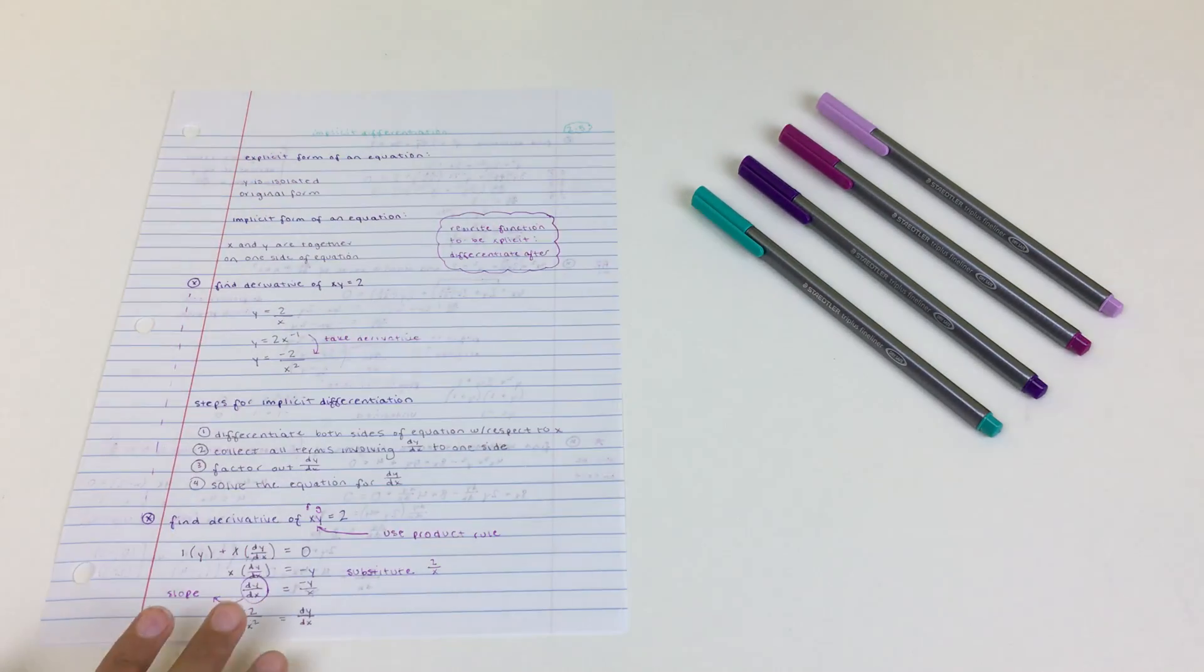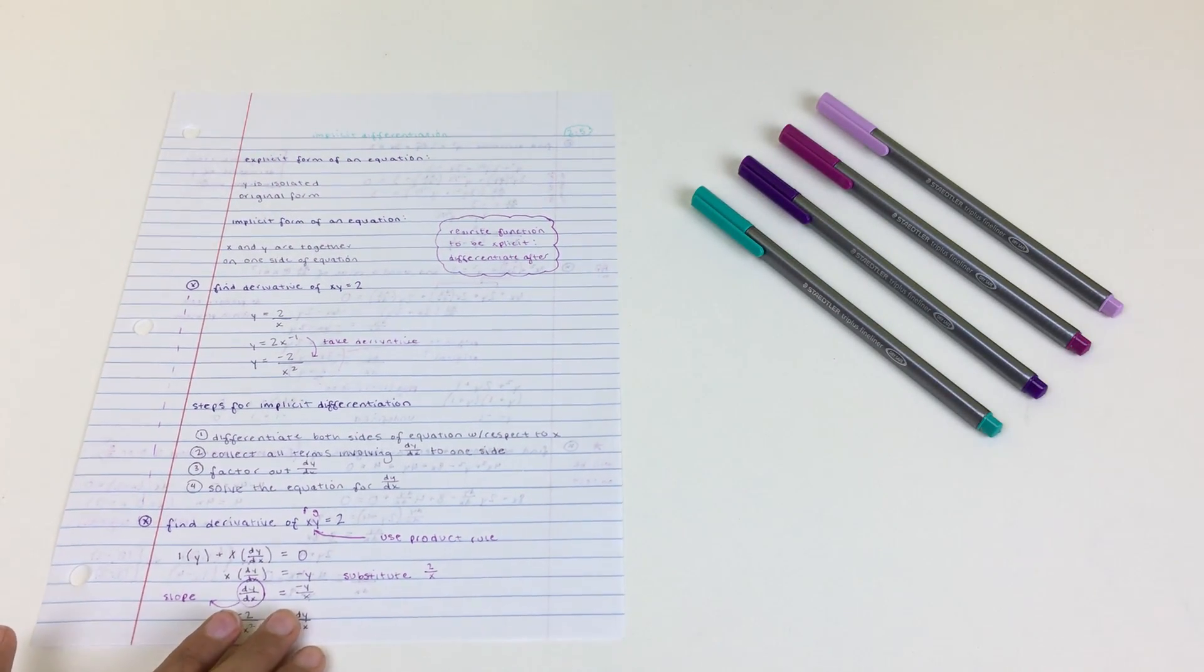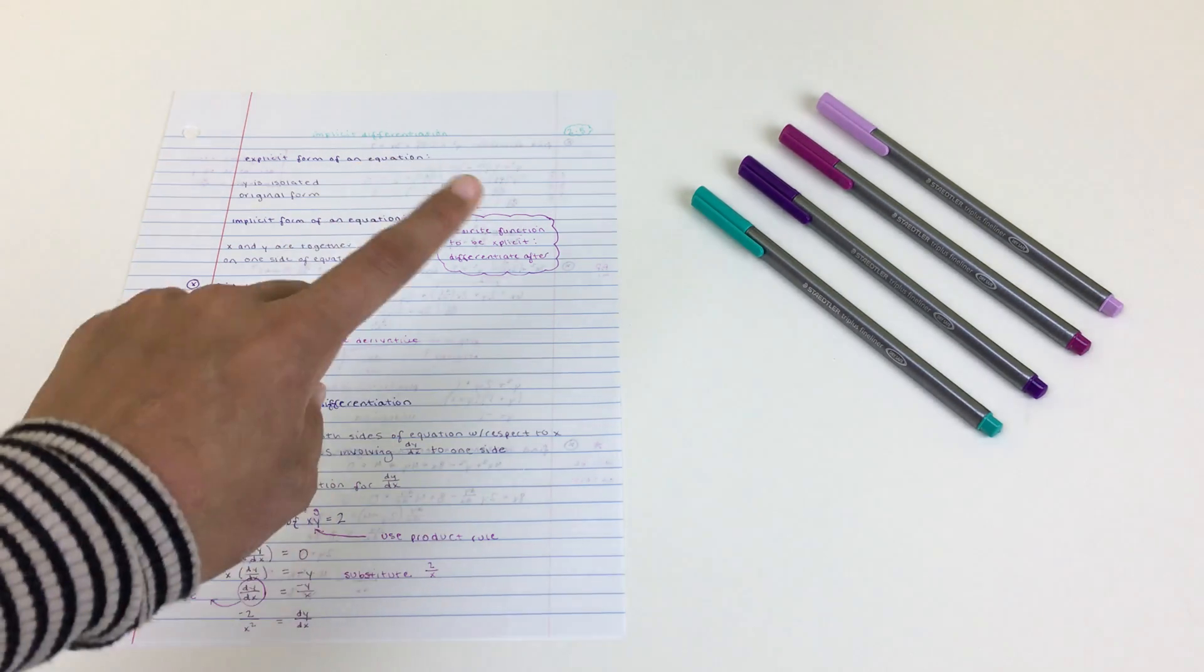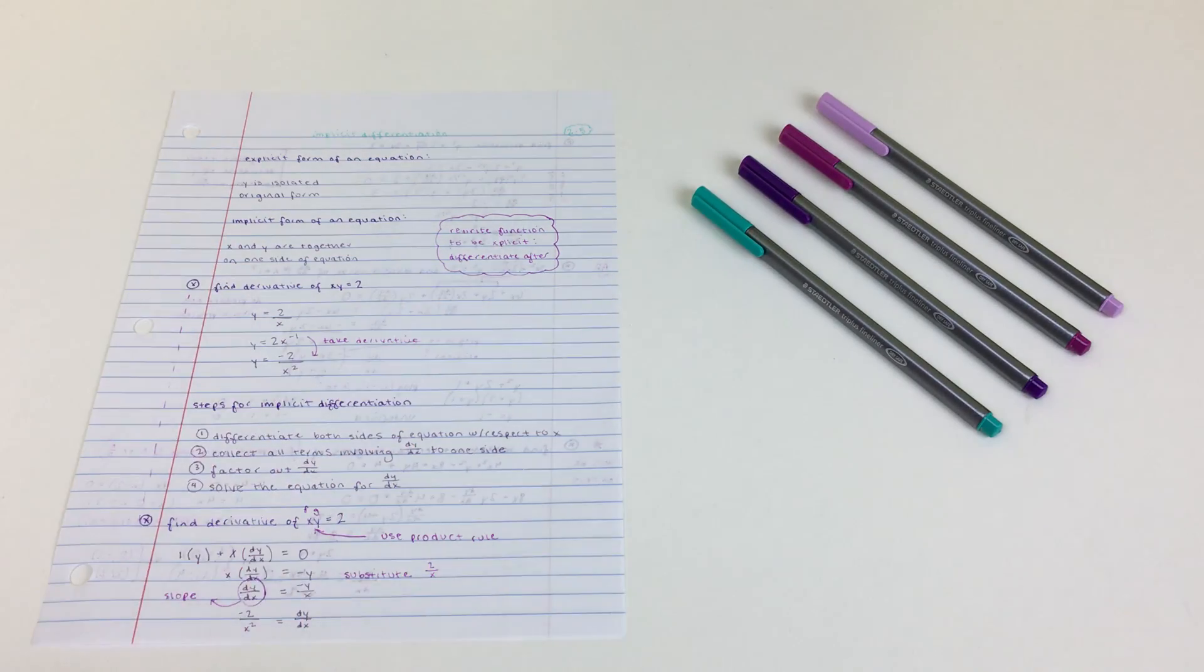And the section number of my notes—that section number is the sub-chapter in my textbook—and I just put a little cloud around it. So all of my notes have that and it stays very consistent.